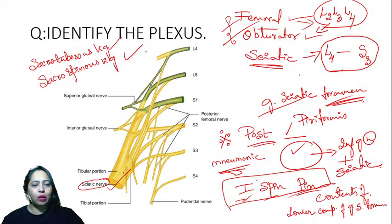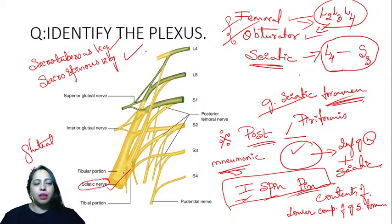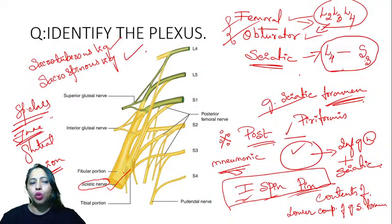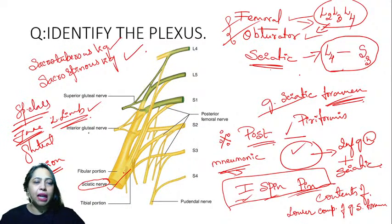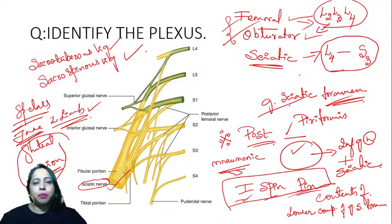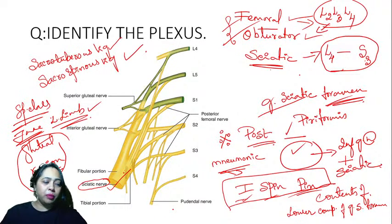I will be taking a separate class on the gluteal region. From June, I'm going to start all lower limb topics in my special class — covering the gluteal region, hip bone, sciatic notch, foramen, piriformis, contents, and mnemonics. That starts from the 1st of June.